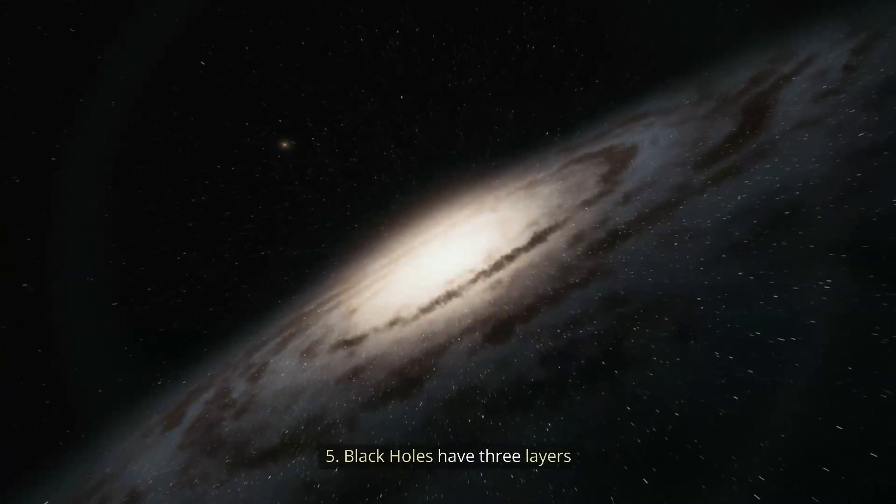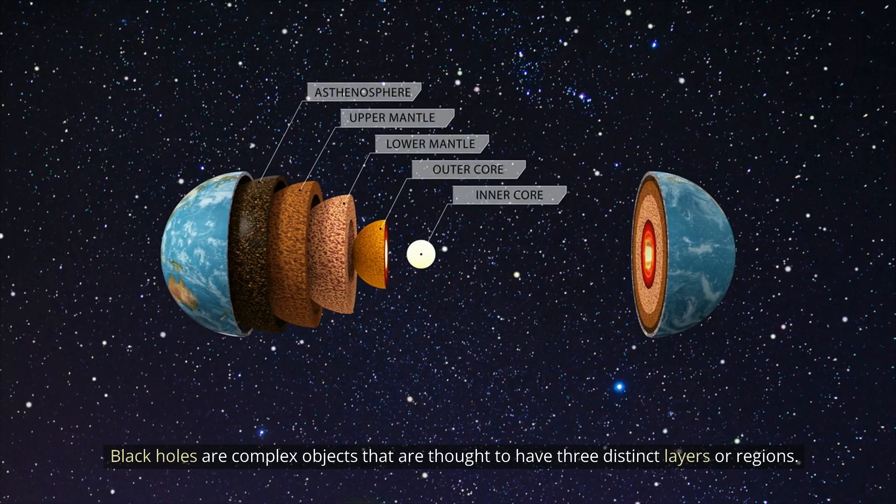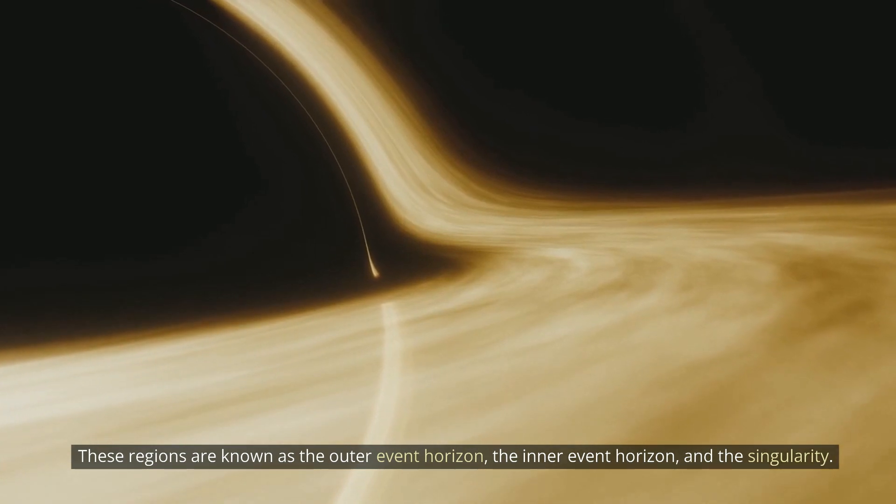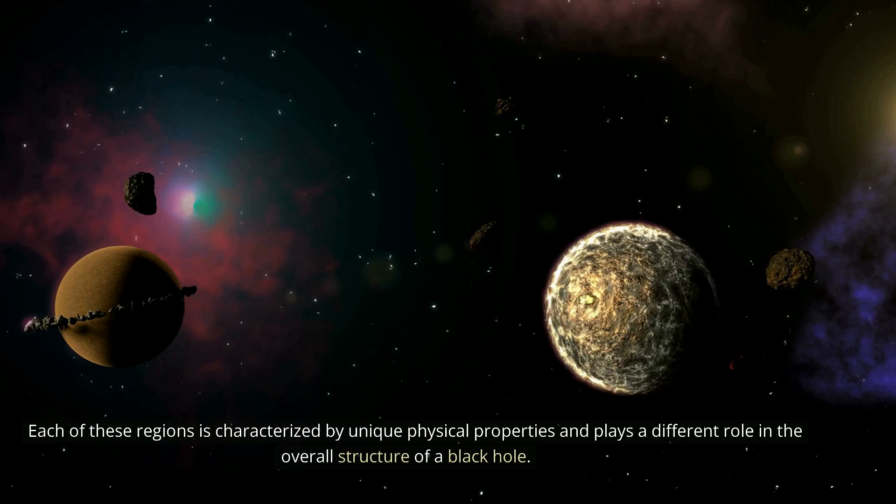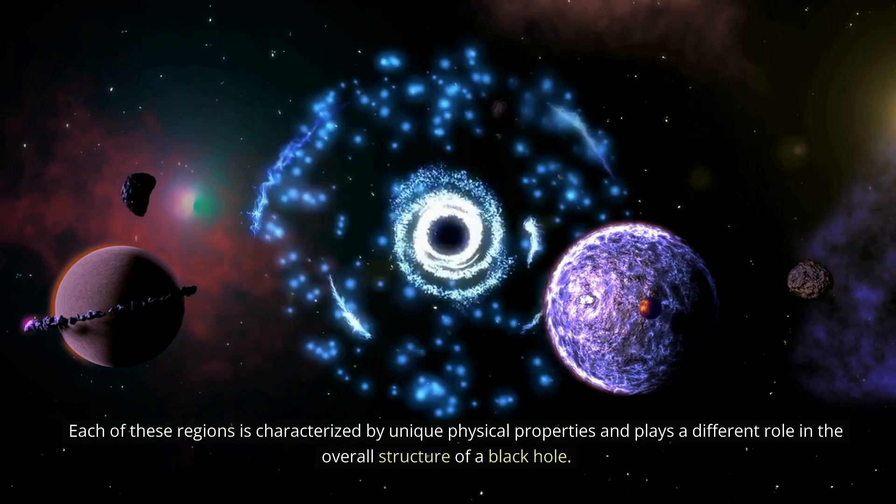Number 5: Black holes have three layers. Black holes are complex objects that are thought to have three distinct layers or regions. These regions are known as the outer event horizon, the inner event horizon, and the singularity. Each of these regions is characterized by unique physical properties and plays a different role in the overall structure of a black hole.